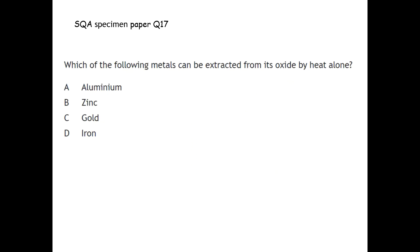Here's an example of a past paper question. Which of the following metals can be extracted from its oxide by heat alone? If you've taken note of what we looked at, the correct answer should be gold because gold is very unreactive. Heat alone will get the oxygen off of gold. Zinc and iron will require carbon, and as we'll see later on, aluminum will require a technique called electrolysis.